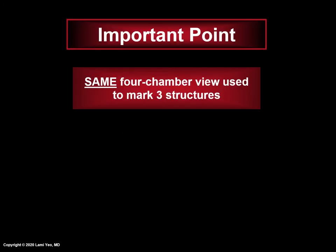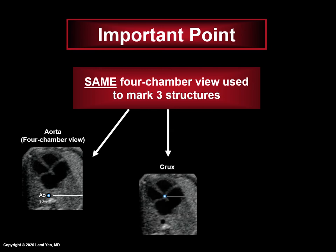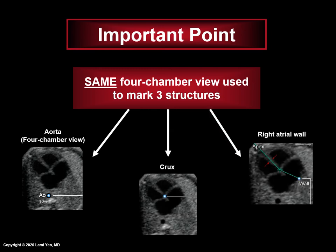Before describing how to mark the next three structures, please note this important point: the same four-chamber view plane is used to mark three anatomical structures — the aorta at the level of the four-chamber view, the crux, and the right atrial wall.